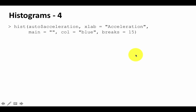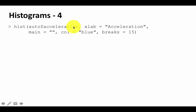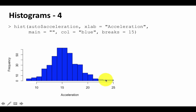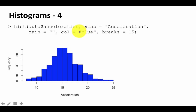You can also control other things in the histogram. For example, hist(auto$acceleration, xlab='acceleration', main='', col='blue', breaks=15). The bars in the previous cases were not colored — only the outline was shown. Now you can specify col='blue' and control the number of bars with breaks=15. You'll see more bars colored blue, with no chart title and 'acceleration' as the x-axis label.